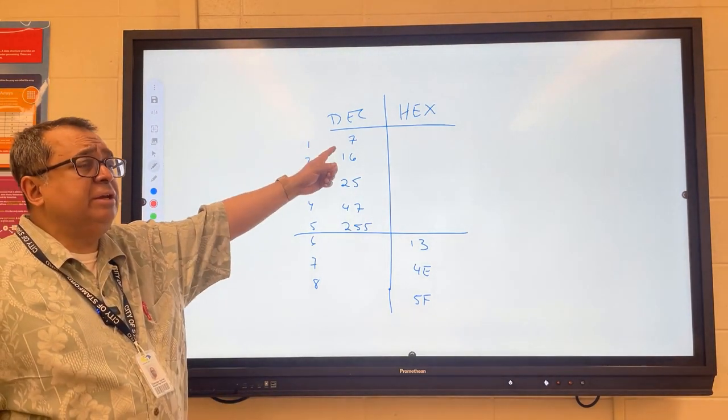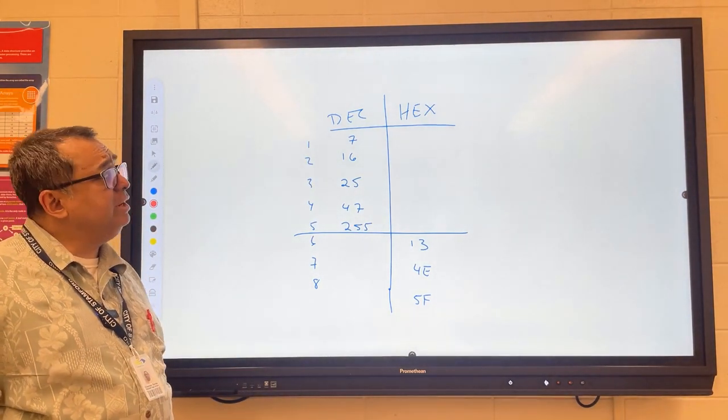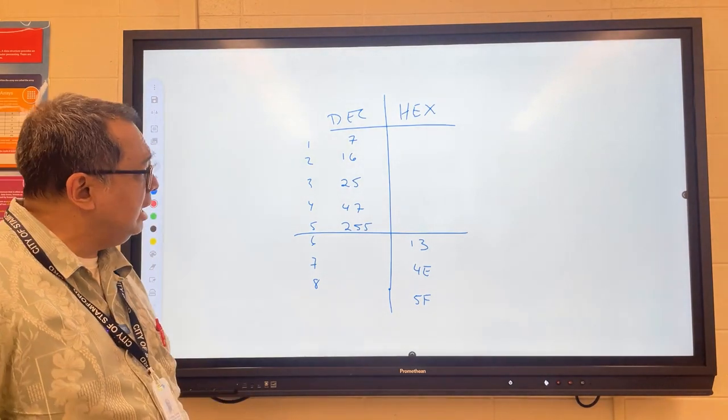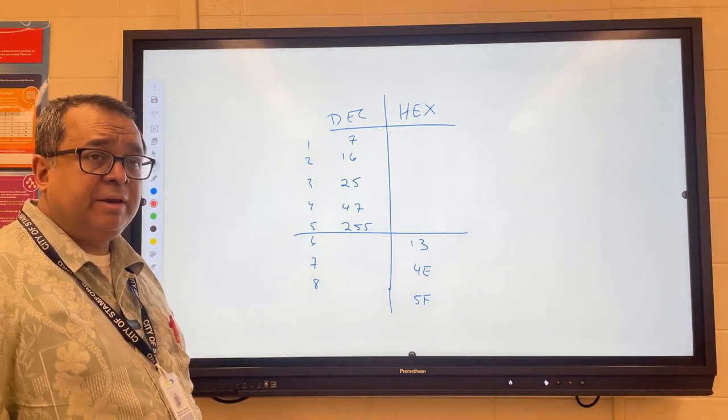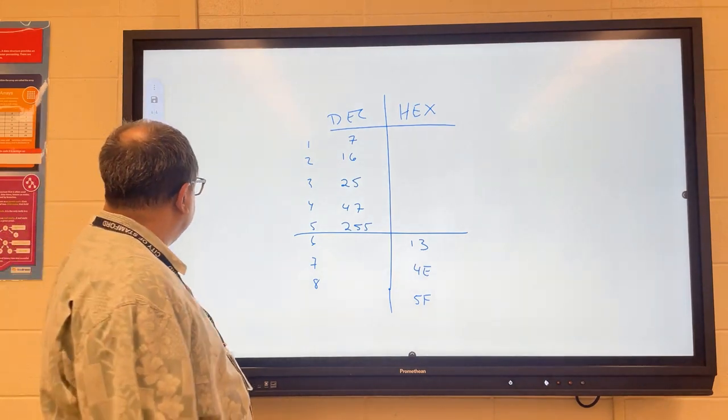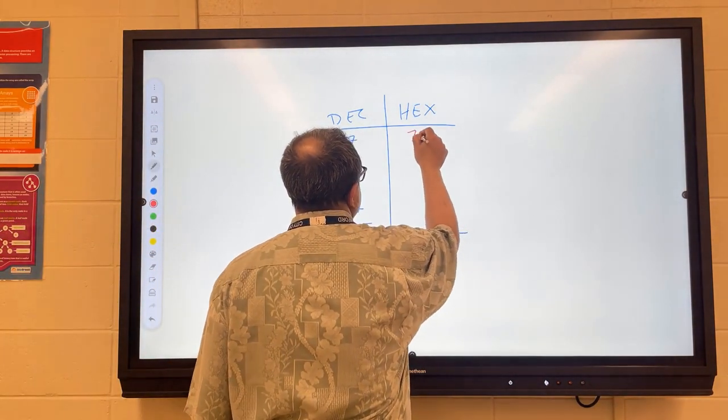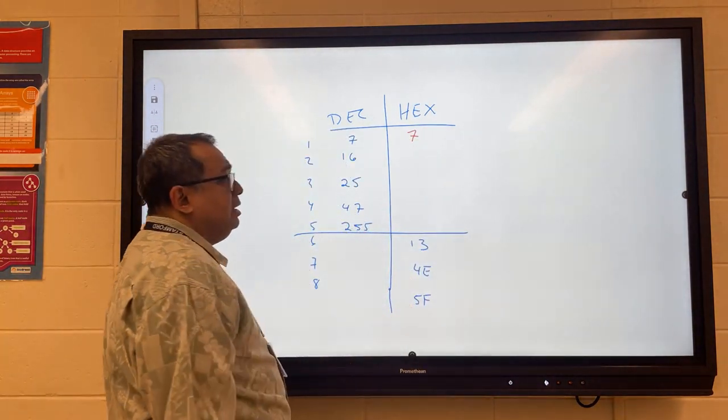This number 7, when we convert that to hexadecimal, what are we going to get? Ms. Telesco, what are we going to get for that? That's just 7. So anything less than 16 is just going to be the number itself.